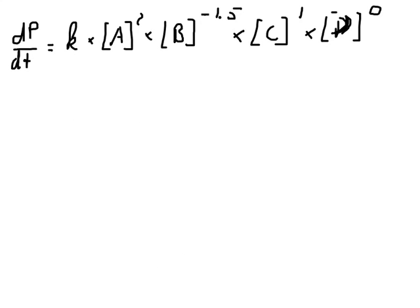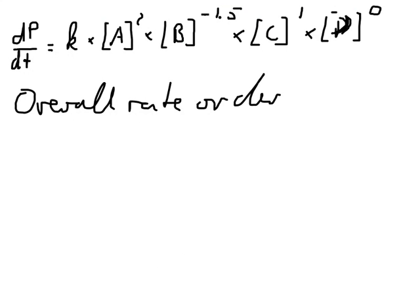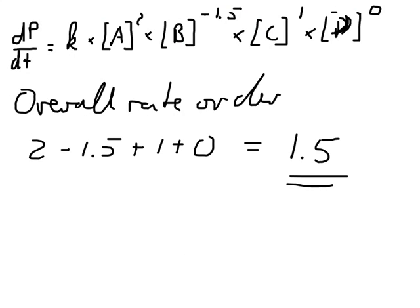We can really do that for any kind of reaction that we can write as a general rate law expression. For example, dP over dt equals positive k times A to the power of 2, B to the power of minus 1.5, C to the power of 1, and D to the power of 0. The overall rate order for that would be 2 minus 1.5 plus 1 plus 0, and that gives us an overall rate order of 1.5.